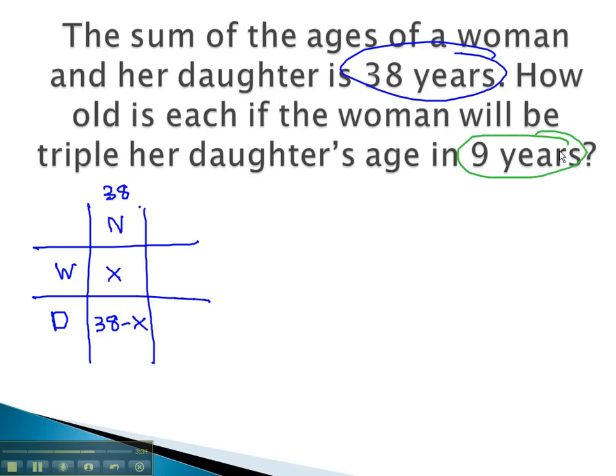Here, the change in time is 9 years. We're adding 9 years into the future. This gives us x plus 9, and 47 minus x.